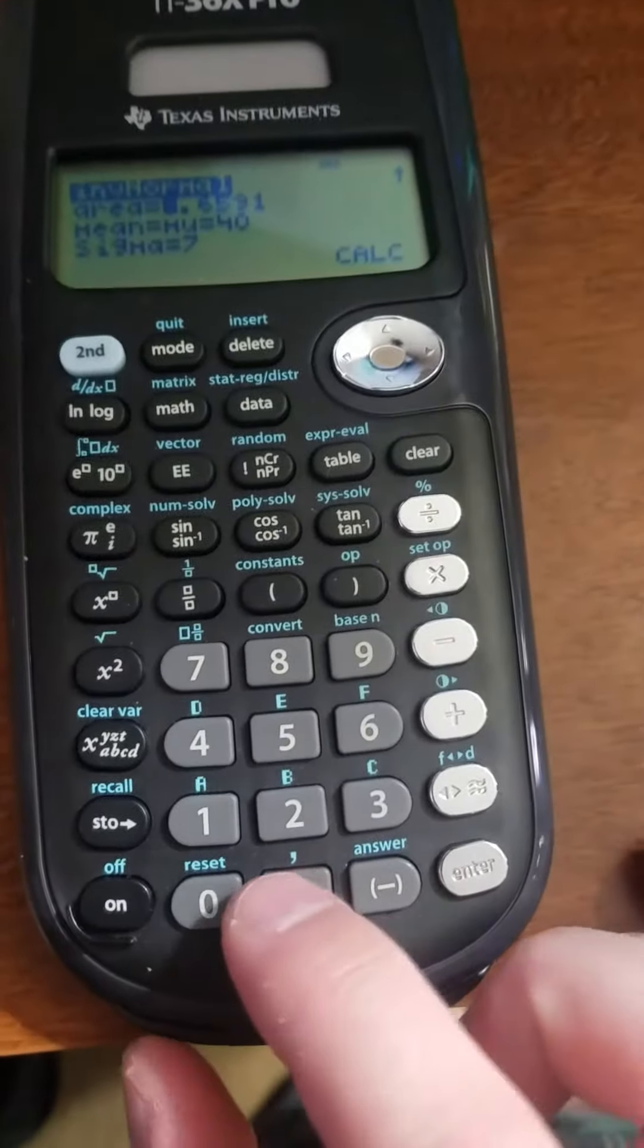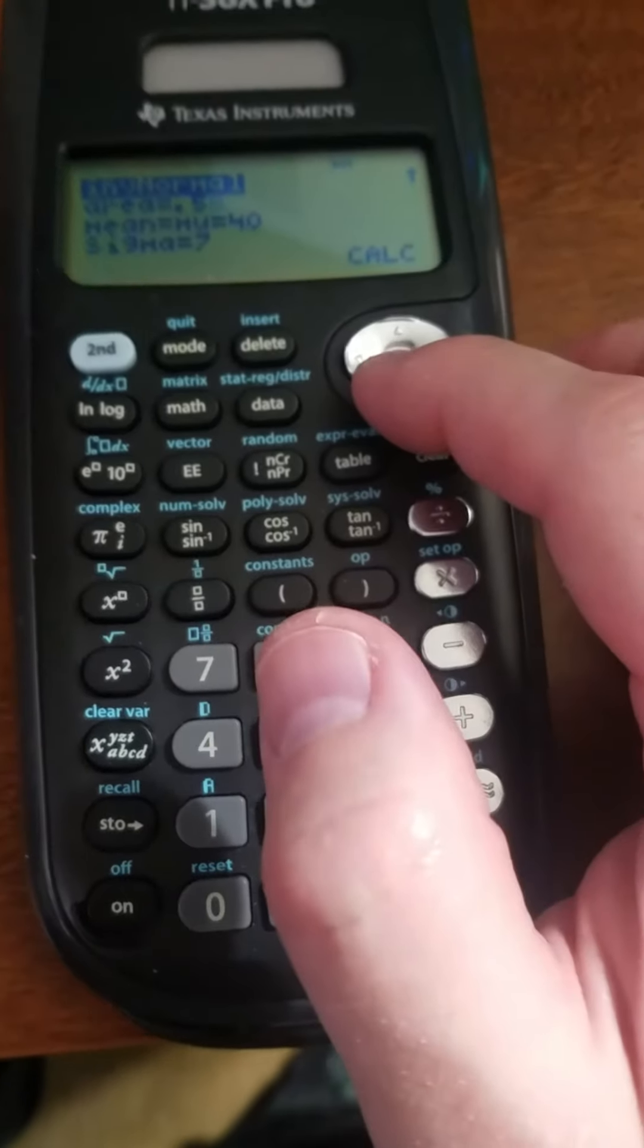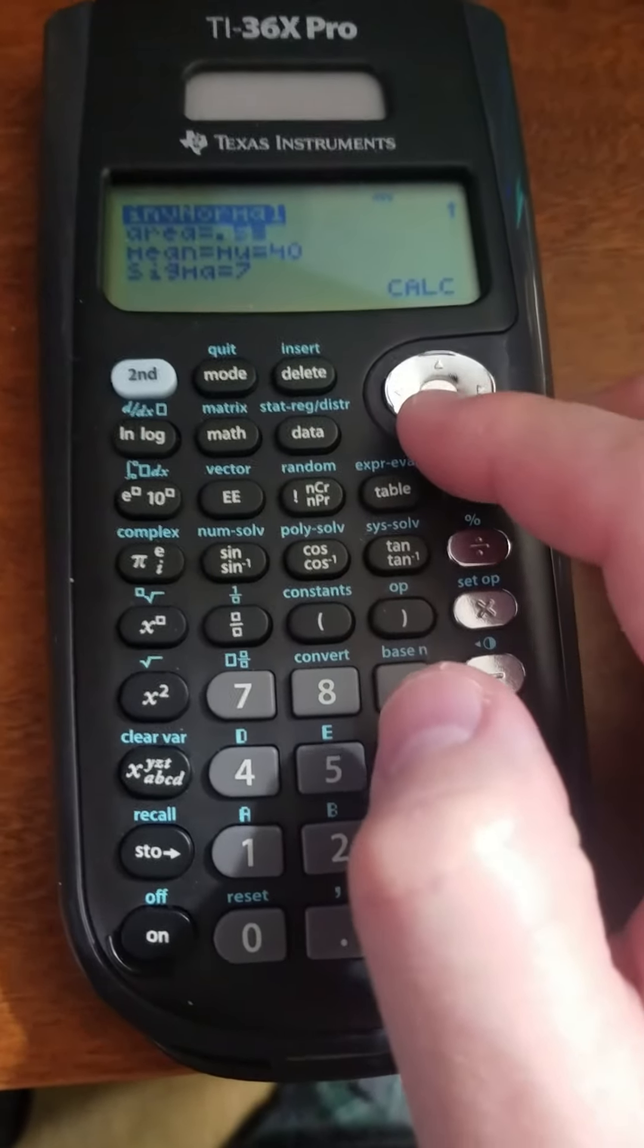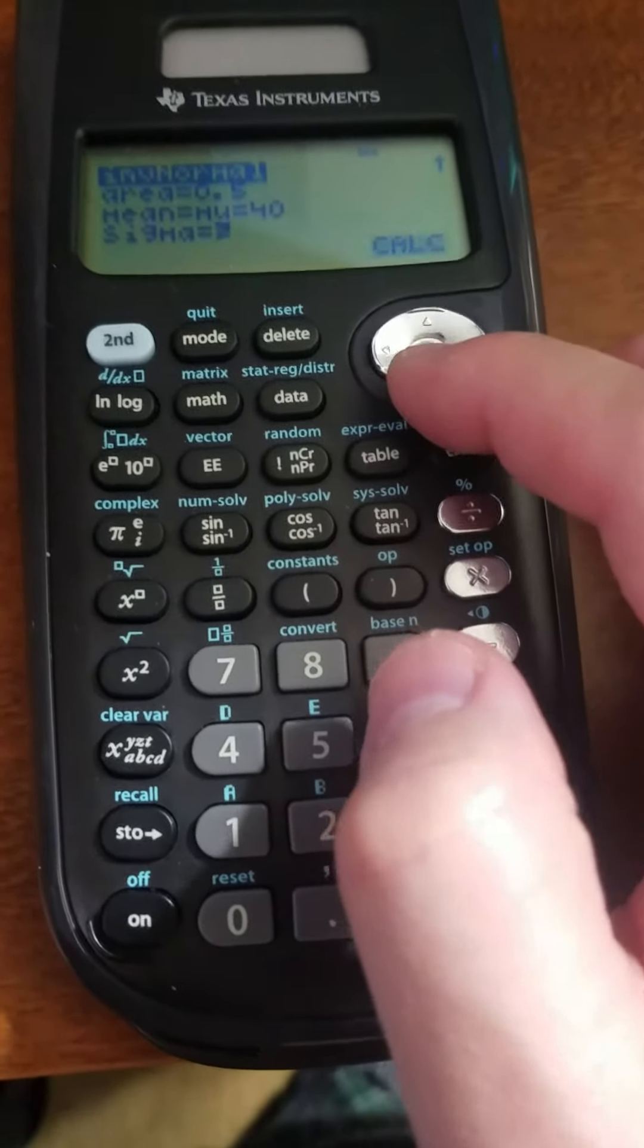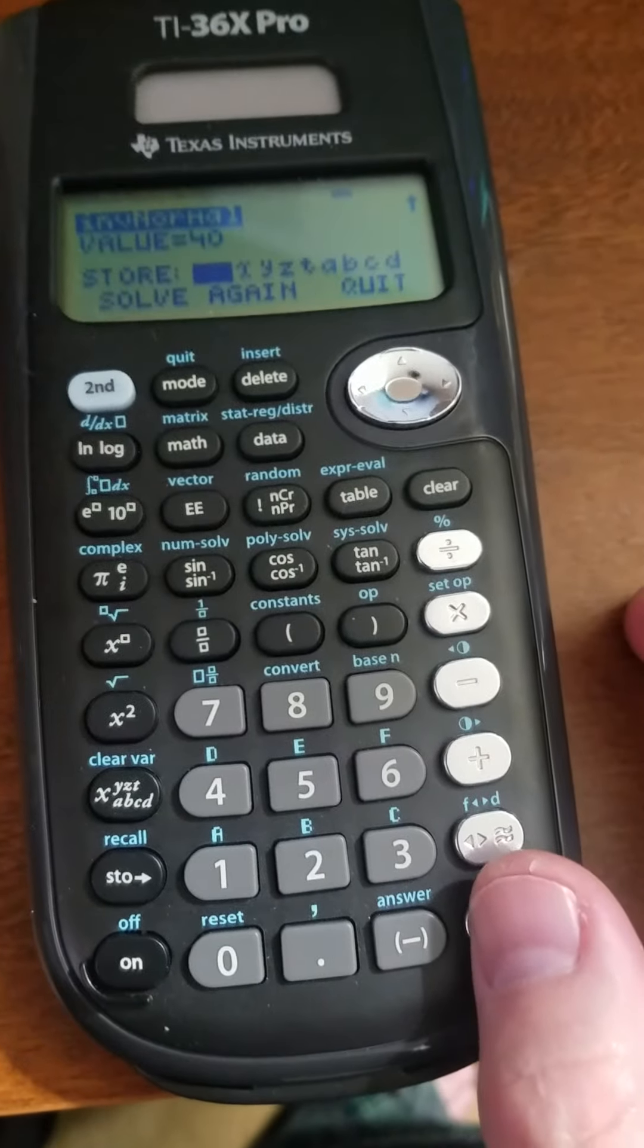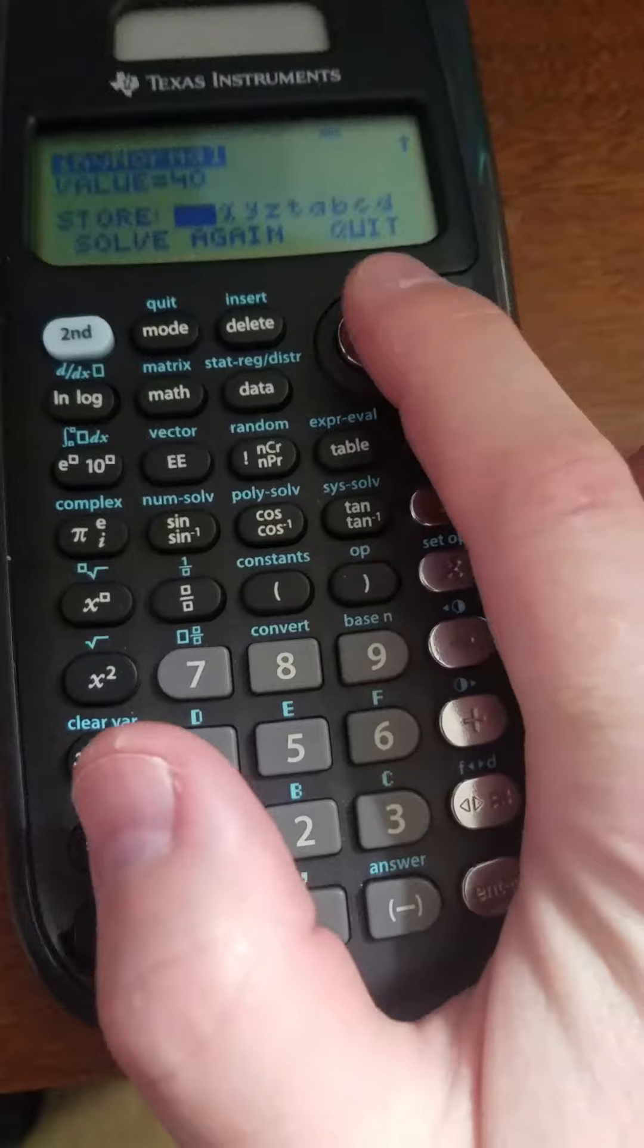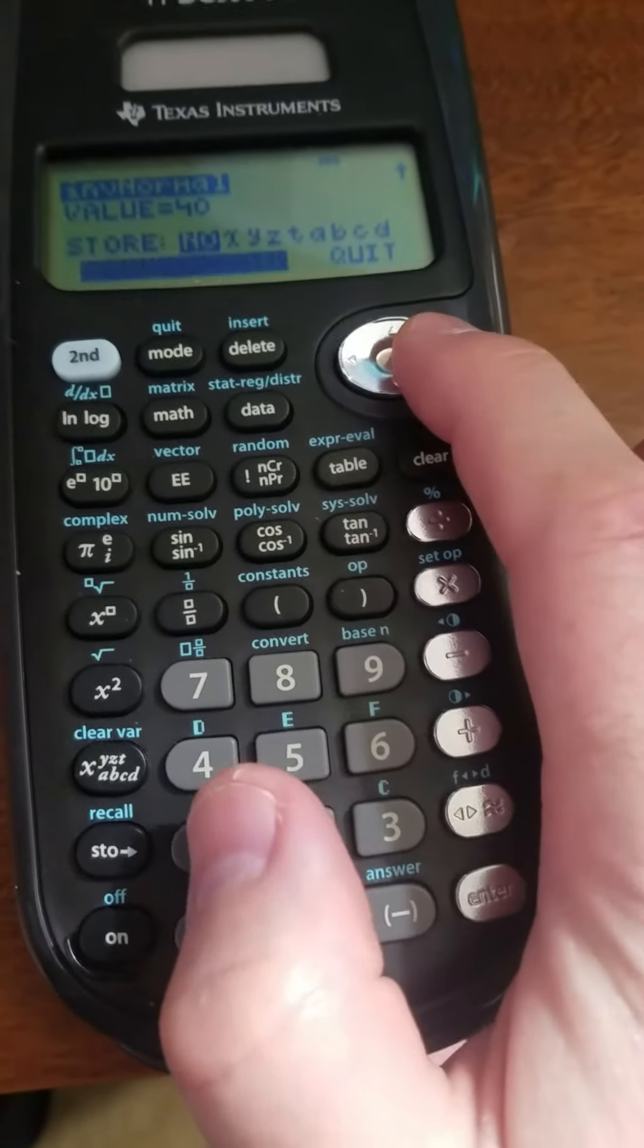So if I wanted to say, what has an area to the left of 0.5? Well, I'm going to expect this to be my mean because the mean has 50% of the area to the left. So I would expect a value of 40 out of this, and lo and behold, we get a value of 40. Again, we can store this in one of our variables if we'd like, or you can just quit.